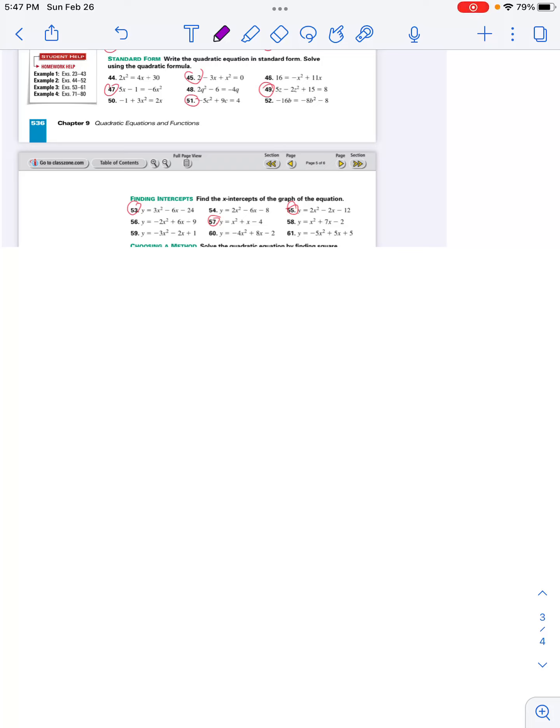I'm going to do number 53 to show you how you should do 53 through 61. So I have y equals 3x squared minus 6x minus 24.